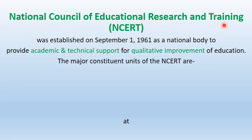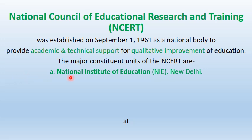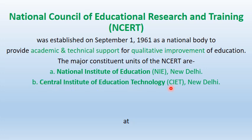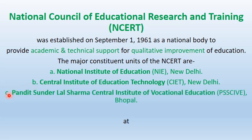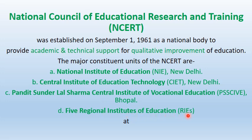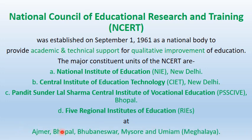The National Council of Educational Research and Training (NCERT), known as SCERT at the state level, was established on September 1, 1961, as a national body to provide academic and technical support for qualitative improvement of education. Its major constituent units include the National Institute of Education (NIE) New Delhi, Central Institute of Educational Technology (CIET) New Delhi, Pandit Sundarlal Sharma Central Institute of Vocational Education (PSSCIVE) Bhopal, and five Regional Institutes of Education (RIEs) at Ajmer, Bhopal, Bhubaneswar, Mysore, and Umiam in Meghalaya.